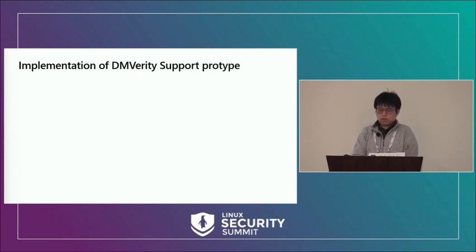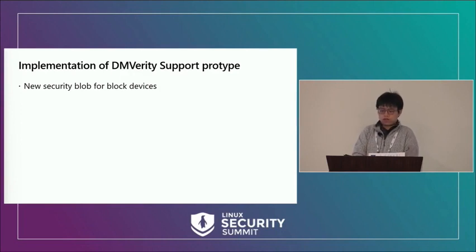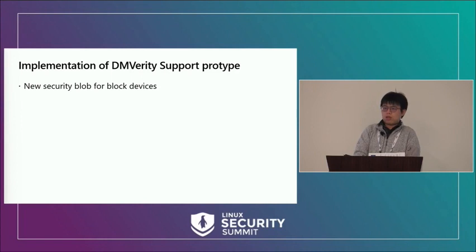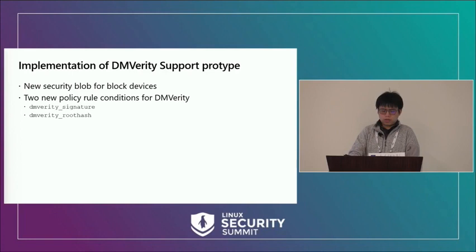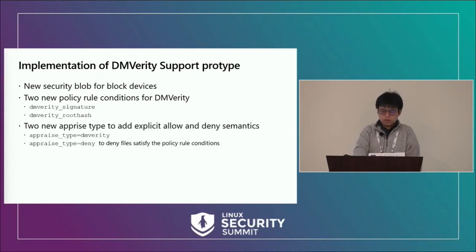Here is the actual implementation of DM-verity support for IMA. First, we added a new security block for the block device to save DM-verity metadata such as the root hash or the signature. During policy evaluation, IMA can make allow or deny decisions based on this metadata. Then we added two new policy conditions for DM-verity, giving the policy the ability to specify which DM-verity volume is allowed to be used. Finally, we added two new appraised types, giving the policy the ability to make allow or deny decisions.